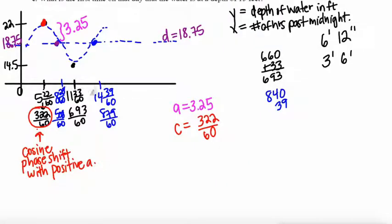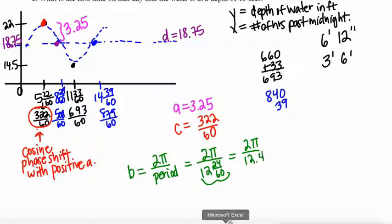We've got C. Our C value with a cosine curve is 322 over 60. Now I just need the B value. I'm going to make the B value as easy as possible here. B equals 2π divided by the period. The period is 12 hours and 24 minutes. When I put 12 hours and 24 minutes into my calculator by putting 12 plus 24 divided by 60, my calculator gives me 12.4. So I can reduce the 2 and the 12.4 to get π over 6.2, so either one of these is a valid B value.